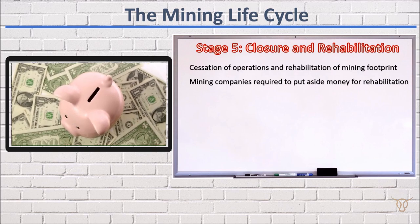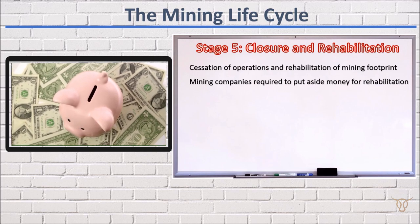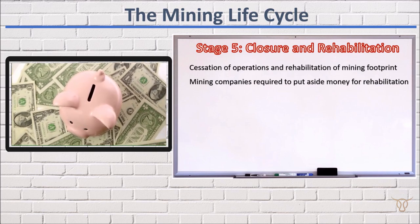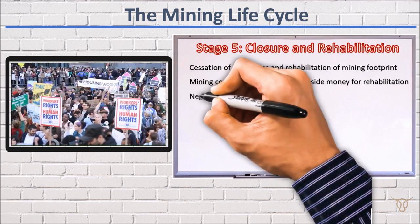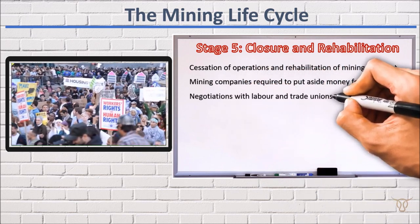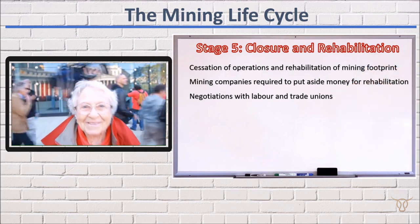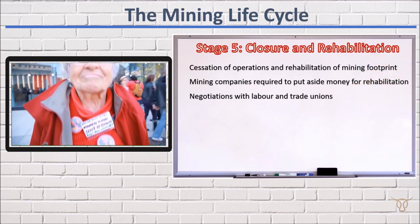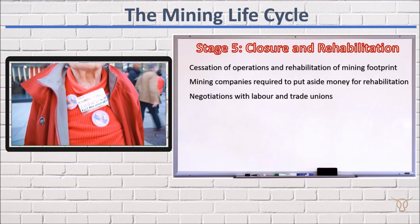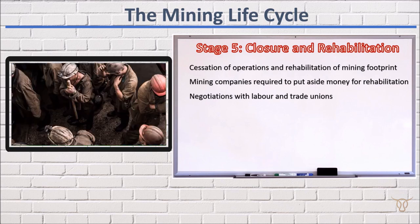Banks would have previously provided financial guarantees covering the rehabilitation costs of the mine. This stage also involves careful negotiations with other stakeholders such as labour and trade unions to ensure that, where possible, the impact of staff redundancies is minimized. If possible, workers would be redeployed to other ongoing operations of the sponsor once the mine was closed.